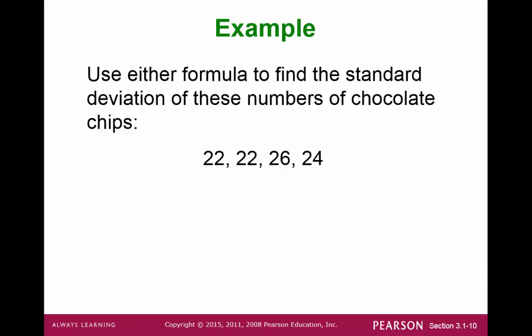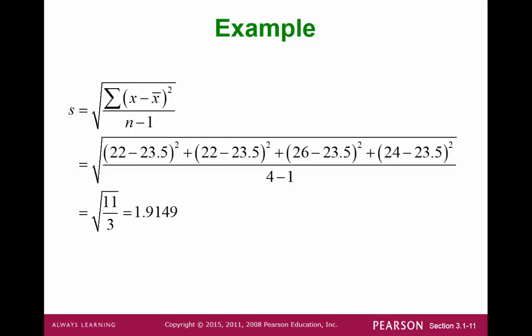Let's take a look at an example with a very small dataset and find the standard deviation using the first formula. The mean is 23.5. We take each x and subtract the mean, then square, then add them all up. With four elements, we divide by 3 and then take the square root. Since the original dataset were all whole numbers, we round off our final answer to 1.9.